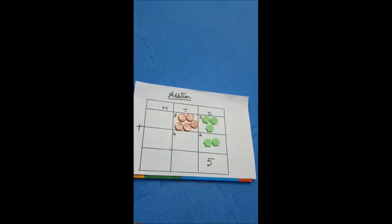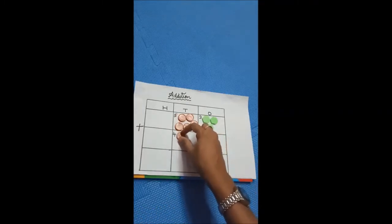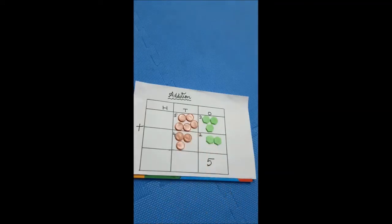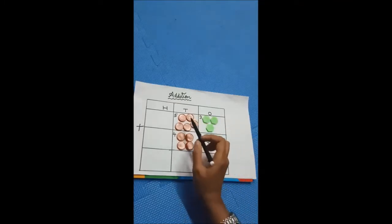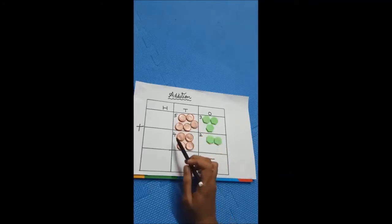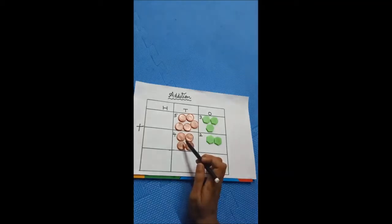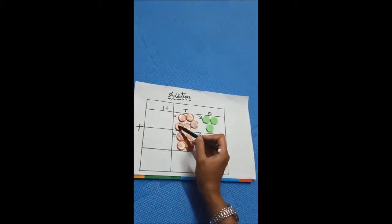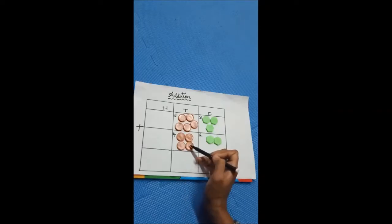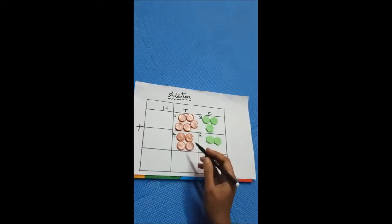What is the next number? Four. So I am going to keep four objects in the lower column — one, two, three, four. See, the number is five, so I kept five objects. The number is four, so I arranged four objects. Shall we find the total now? One, two, three, four, five, six, seven, eight, nine. So what is the total here? Nine. Very good.